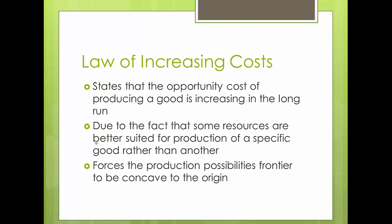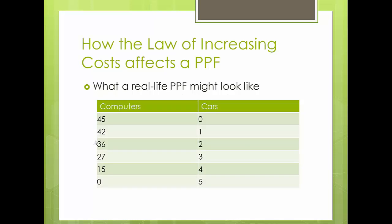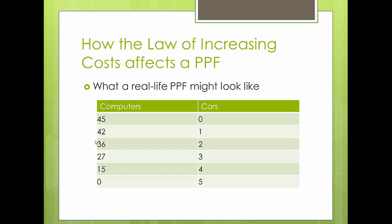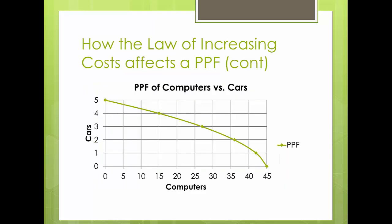Opportunity costs are rarely constant. A constant opportunity cost graph turns into a linear production possibilities frontier because you give up the same amount every time. A real-life PPF would be more curved. The next chart shows what a real-life PPF might look like. Initially, we might produce zero cars and 45 computers. The opportunity cost of producing one car is only three computers, going from 45 to 42. But producing a second car has an opportunity cost of 6, going from 42 to 36. Then 9, and each time it keeps increasing — turning the graph into a curve where opportunity cost starts small and keeps growing.